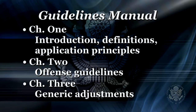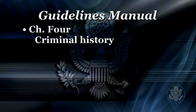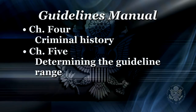Chapter 3 of the manual provides additional adjustments to the offense level based upon the defendant's conduct associated with the instant federal offense. Chapter 4 of the manual is the basis for the horizontal axis of the sentencing table and provides instruction on the determination of the defendant's criminal history category. Chapter 5 of the manual provides instruction to the court on the determination of the guideline range, including consideration of statutory penalties as well as factors that may cause the judge to sentence outside of the otherwise applicable guideline range.